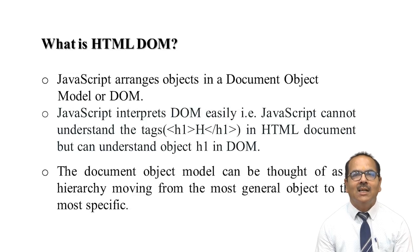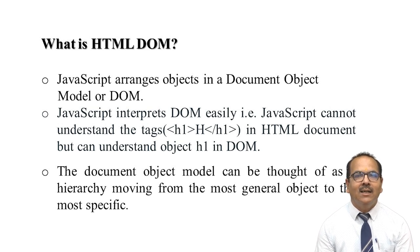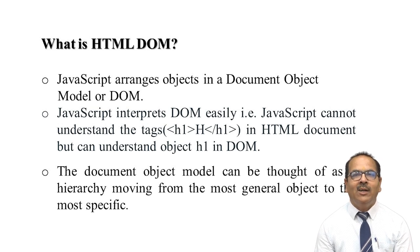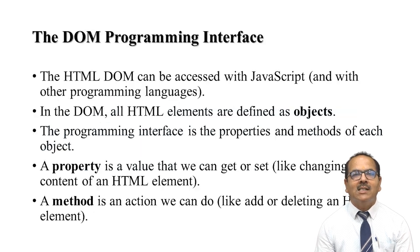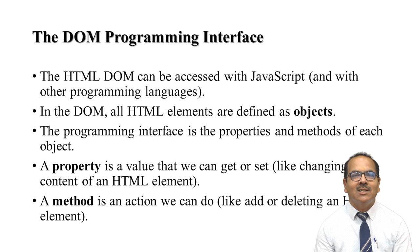JavaScript arranges objects in a Document Object Model. JavaScript interprets DOM easily but cannot understand tags like h1 or other HTML tags directly — it understands objects in the DOM instead. HTML DOM is a standard object model and programming interface for HTML. It defines HTML elements as objects, their properties, methods to take actions, and events for all HTML elements.